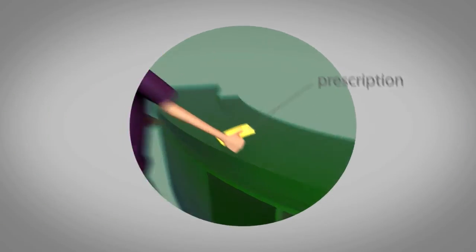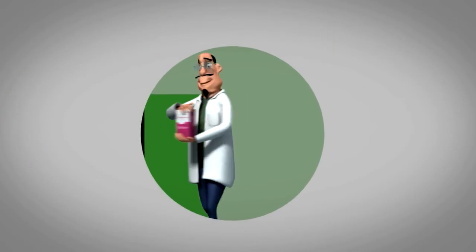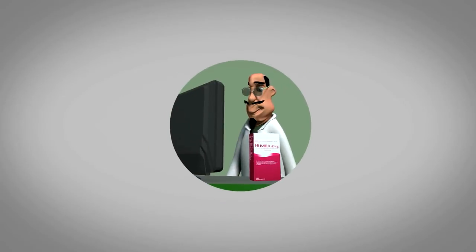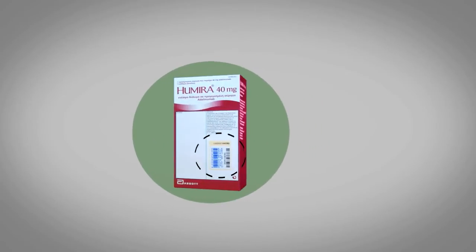George gives his prescription to the pharmacist, who removes the medicine from the storage refrigerator and carries it in front of his computer. The pharmacist focuses on the barcode that can be found on Humira's package and scans it.